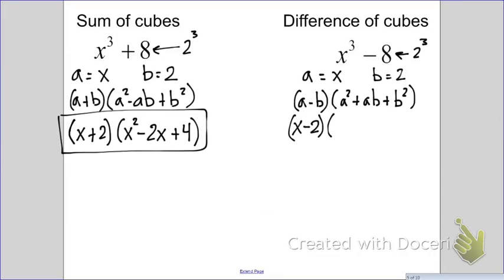Let's go ahead and put in all our A's and B's, our X's and 2's. So, A minus B would be X minus 2. A squared, that'd be X squared. AB would be our 2X. We just like to put the 2 first. Plus B squared. B is 2, so it's 2 squared, which is 4. And this would be technically your answer.